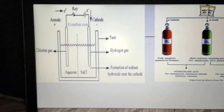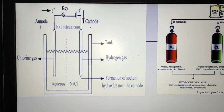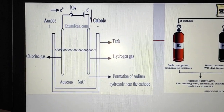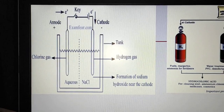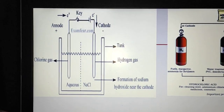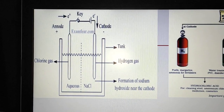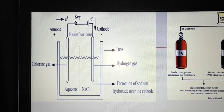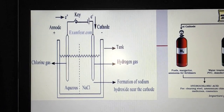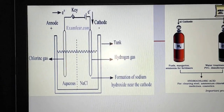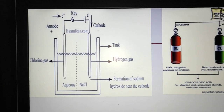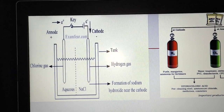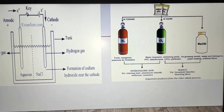When H₂ and Cl₂ are combined, they produce hydrochloric acid used for cleaning steel and making ammonium chloride. When Cl₂ reacts with NaOH it becomes bleach, used for bleaching fibers. In the newly added NCERT diagram, a beaker contains aqueous NaCl (brine solution) with two electrodes connected to a battery — the anode and cathode. Chlorine gas is released at the anode and hydrogen gas is evolved at the cathode. This is how the chloralkali process takes place.